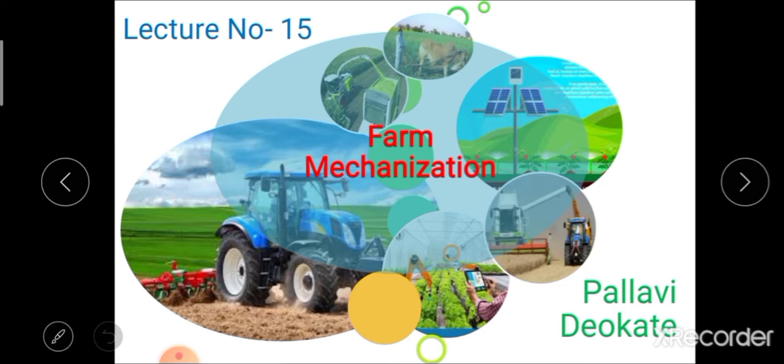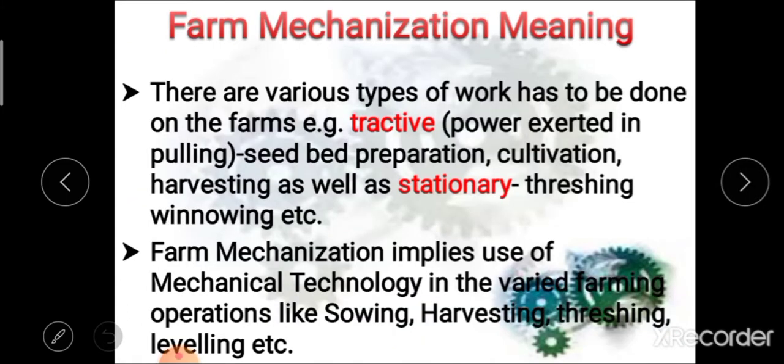We will see different points in farm mechanization one by one. First, the meaning of farm mechanization. In agriculture, there are various types of works or operations that have to be done on the farm. These works can be done manually or with the help of different machineries. For example, tractive works — that means works which use power exerted in pulling — such as seedbed preparation, cultivation, harvesting, etc. We call these tractive works.